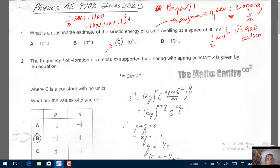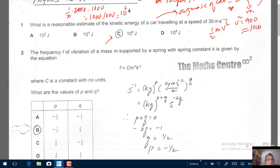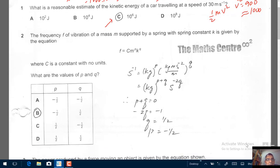Question number 2. The frequency of vibration of a mass m supported by a spring with spring constant K is given by this equation. C is a constant with no units. So F is frequency, F the units will be 1 over seconds. This is time is measured in seconds. So I just use 1 over s. You can also write it as s to the power of minus 1.